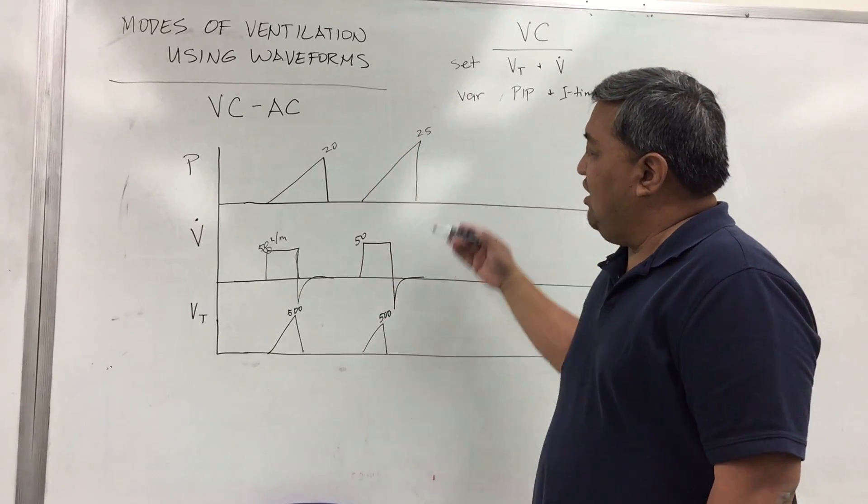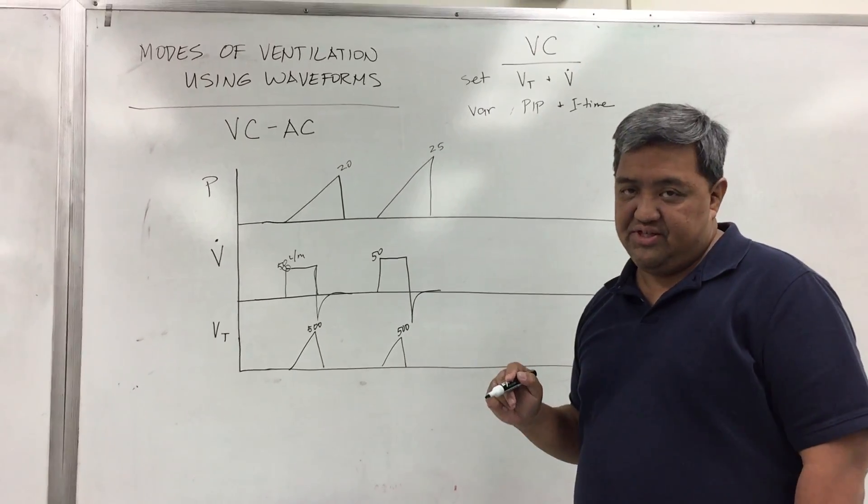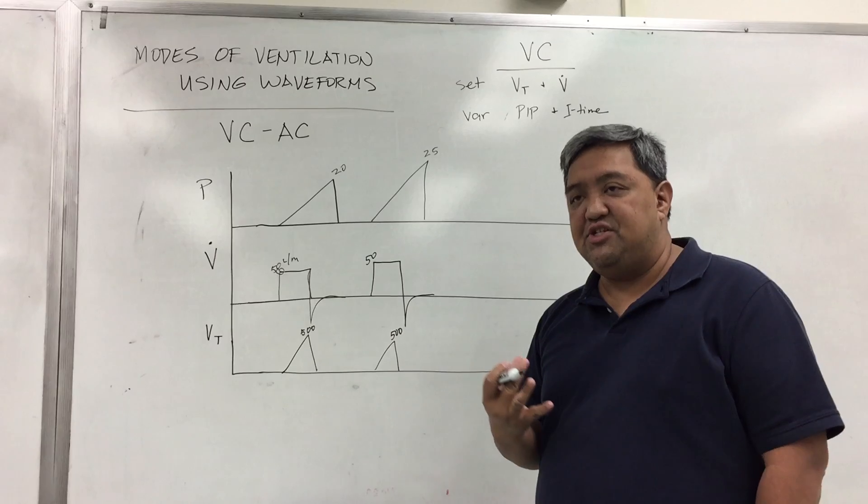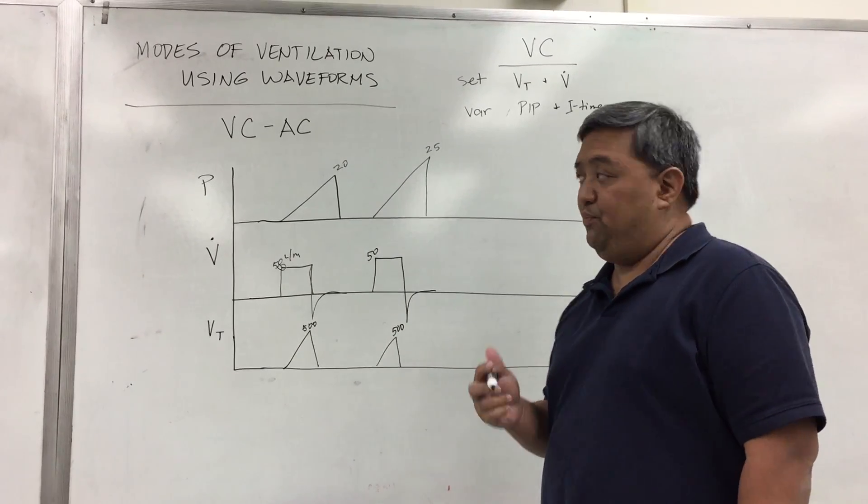All of these are what you call controlled breaths. If it's an assisted breath, then that means the patient is trying to trigger the breath. Hence, you will have a negative inflection because it goes down on the pressure.